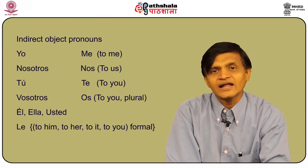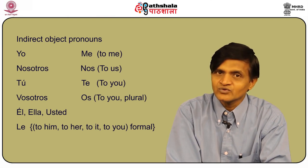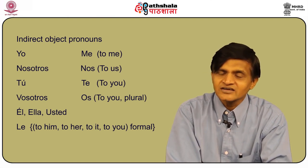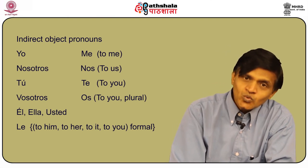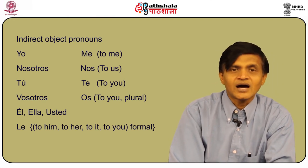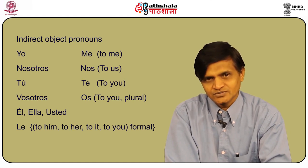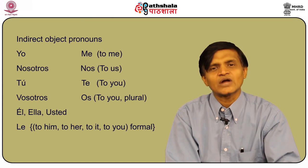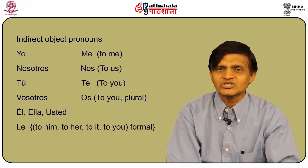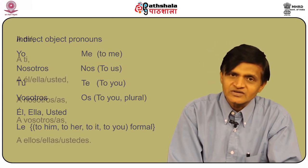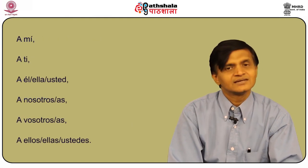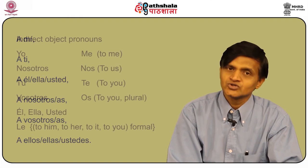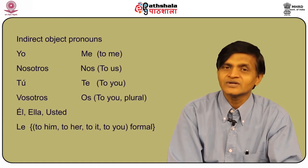The DOP answers the question 'what' or 'who', and the IOP answers the question 'for whom' or 'to whom' the action is done. For example: Te di un anillo — I gave you a ring. You can clearly see that if we ask 'to whom was the ring given', the answer is 'te', which is the indirect object pronoun.